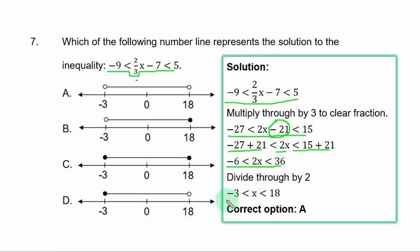You have minus 6 less than 2x less than 36. Divide through by 2. And you have minus 3 less than x less than 18. The symbol we have here is strict symbol and you use open dot or open circle to represent it. Going by that understanding, A is the correct option. You have open dot here with the note less than on the other side. The arrowhead is not shown since you have the given solution in a range.